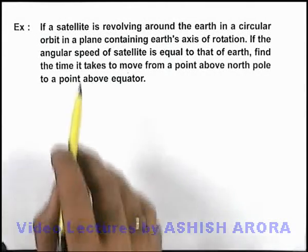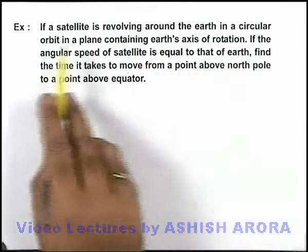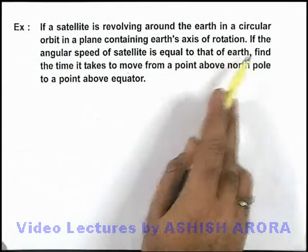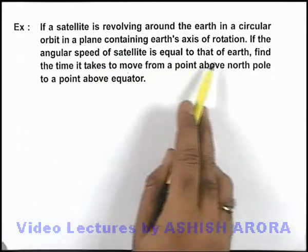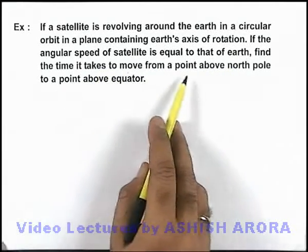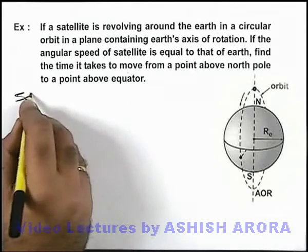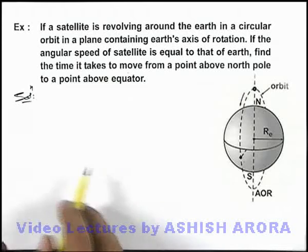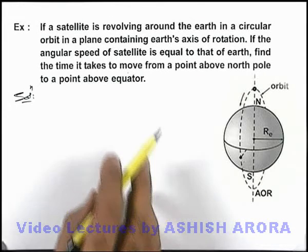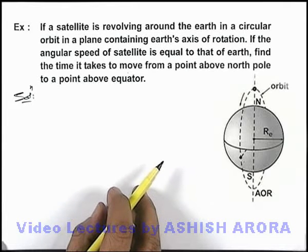In this example, we are given that a satellite is revolving round the earth in a circular orbit in a plane containing earth's axis of rotation. If the angular speed of the satellite is equal to that of earth, we are required to find the time it takes to move from a point above the north pole to a point above the equator. Here, let's first understand the situation. As you can see in this figure, the satellite is moving from the north pole to the equator, and it traverses a total angle of π/2.